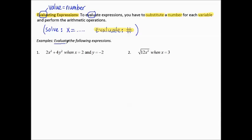Example: evaluate the following expressions. So we see we need a value, which is a number, and they're giving us numbers for each of the variables in the first expression. 2x² + 4y² when x equals 2 and y equals -2. So we can write 2, instead of x we're going to plug in what the x equals. So we're going to put 2 there and then it gets squared.